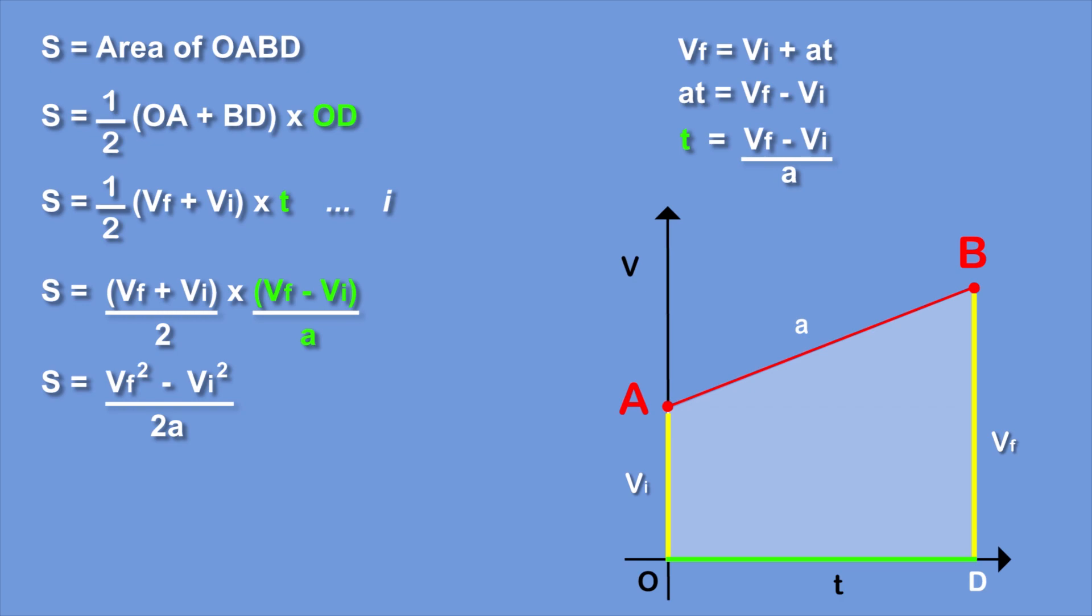Now we just have to simplify the equation by simple mathematical rules and we will get 2s equals vf squared minus vi squared.